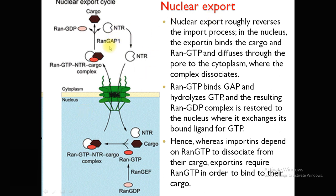Now for the nuclear export cycle — this cycle is roughly the reverse of the import process. In the import cycle the process starts from the cytoplasm and ends within the nucleus; in the export cycle it starts within the nucleus. The exportin protein — a nuclear transport receptor — binds to the cargo protein inside the nucleus, and the RanGTP-cargo-NTR complex diffuses from nucleus to cytoplasm through the pore.